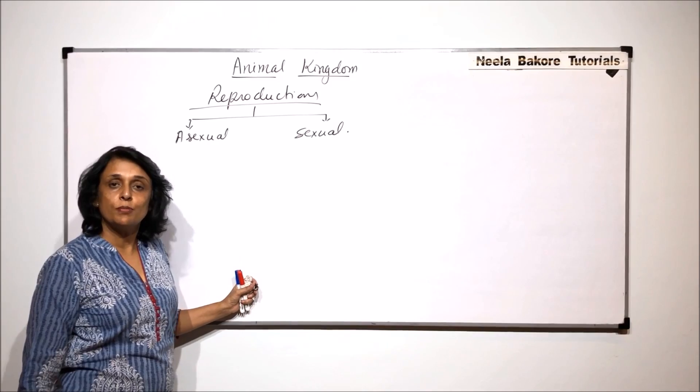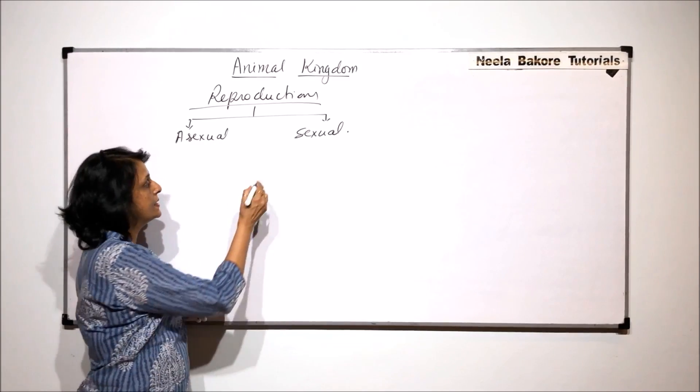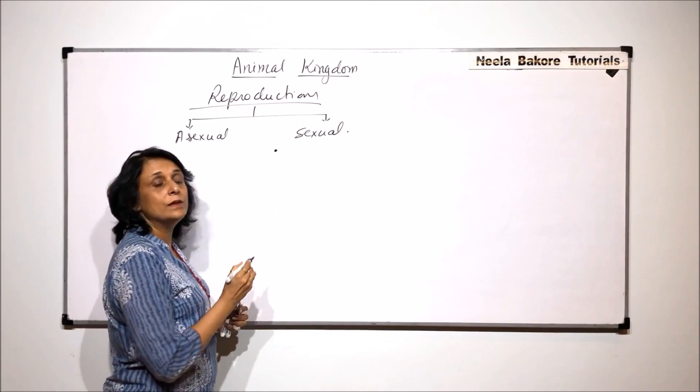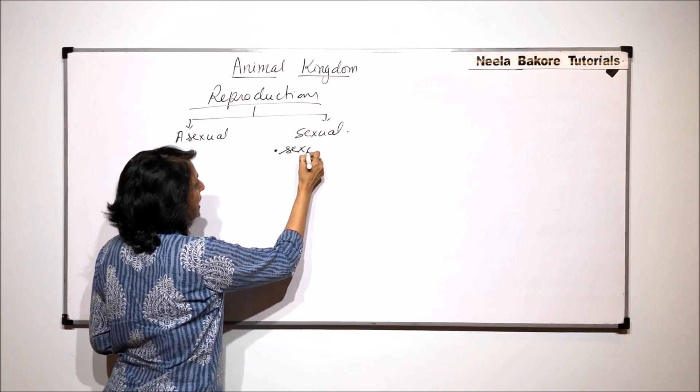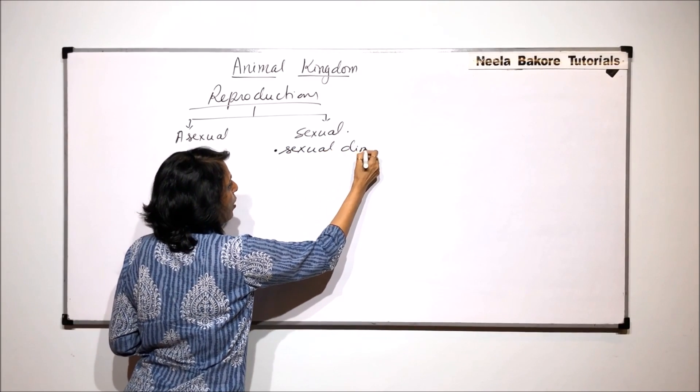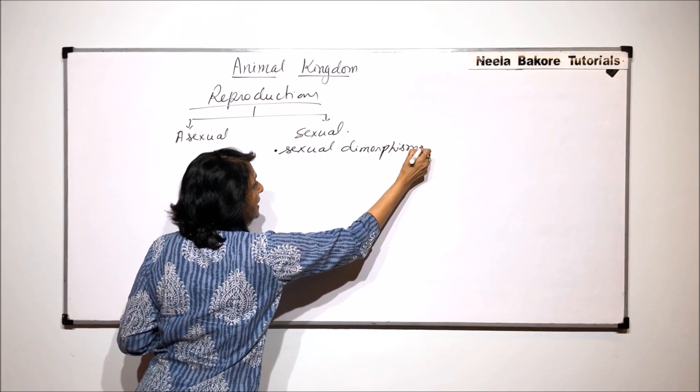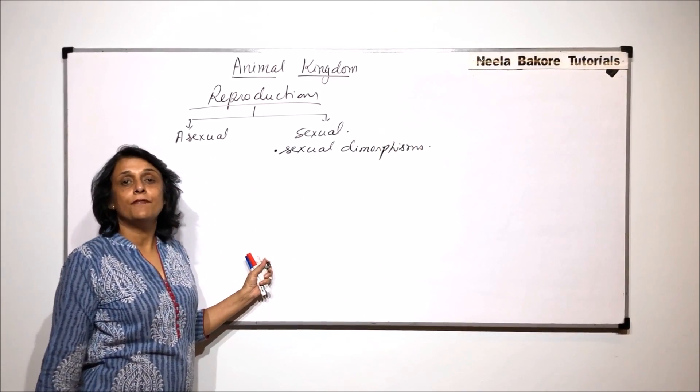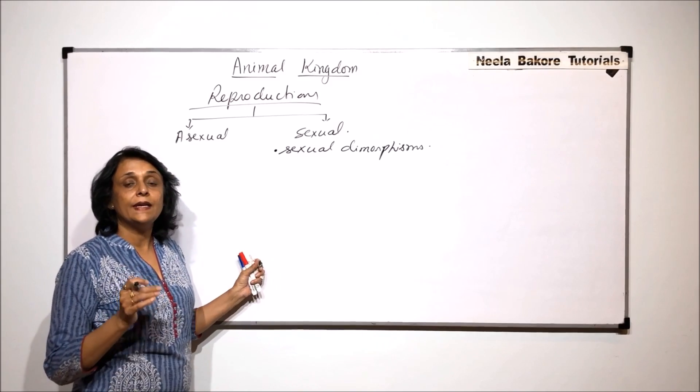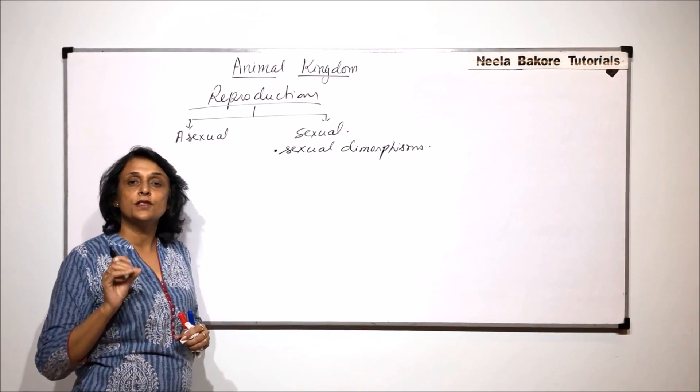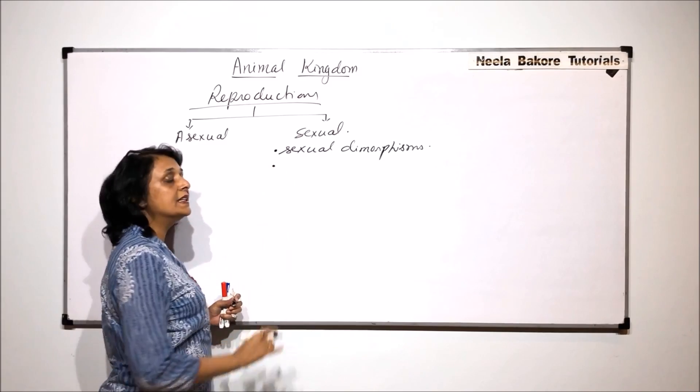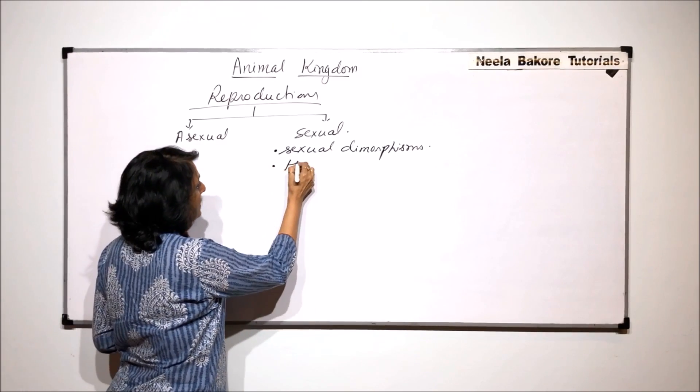When we talk of sexual reproduction, there are two possibilities. One, that the animals show sexual dimorphism. That means the males and females, they are separate and they have morphological differences.